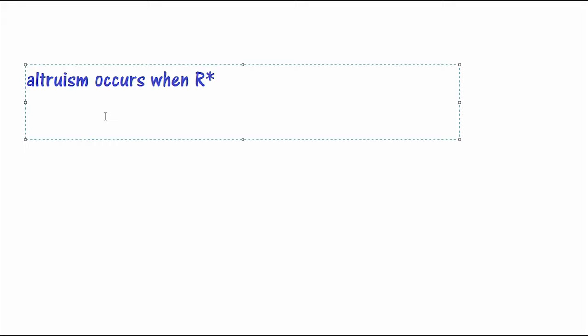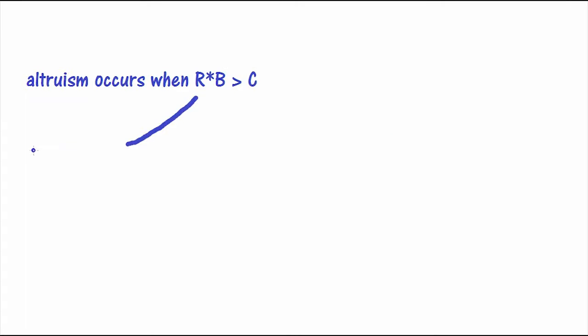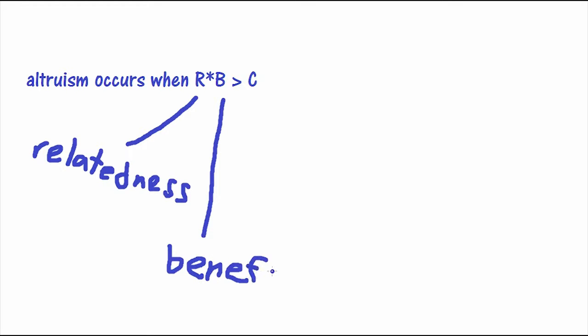A popular explanation for altruism, called Hamilton's Rule, can be used for spite as well. It says altruism occurs when R times B is greater than C. R stands for the relatedness of individuals, which is a measure of how many genes they share. B stands for the benefit of the recipient, and C stands for the cost of the actor. So when the relatedness times the benefit is greater than the cost, there's an evolutionary pressure for altruistic behaviors.